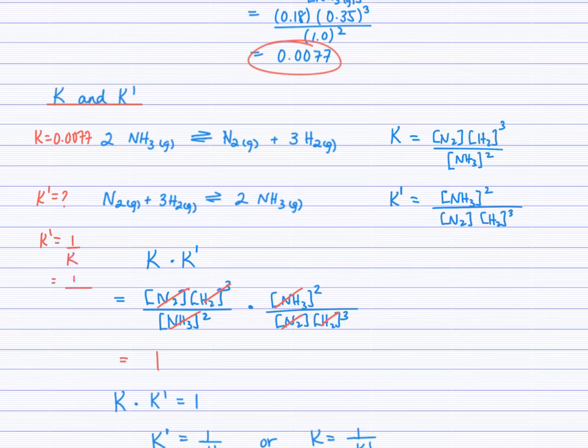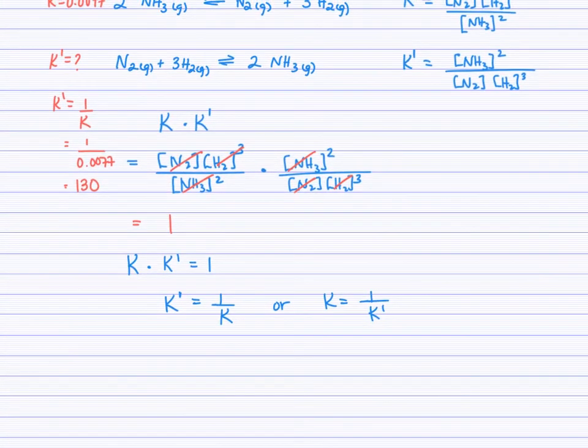We'll just take the reciprocal, 1 over 0.0077. And so K primed equals 130. So that relationship can be used when you know the value of K for one reaction and use that reciprocal relationship if you're looking for K for the reverse reaction. And that's it.